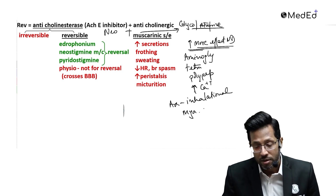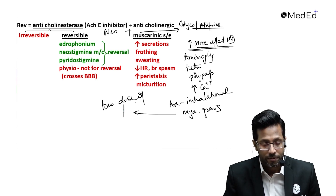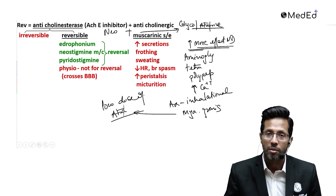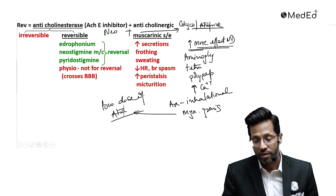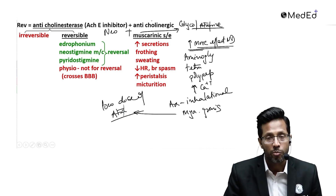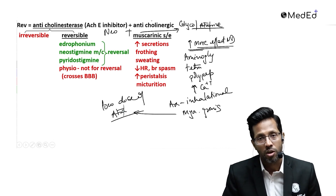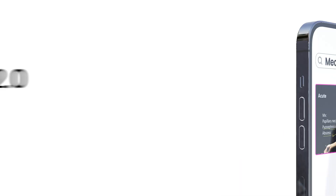Even myasthenia gravis increases the effect of non-depolarizing agents — that's why in myasthenia gravis patients, a low dose of atracurium must be used. This concludes the complete discussion on non-depolarizing drugs, depolarizing drugs, reversal agents, and neuromuscular monitoring.